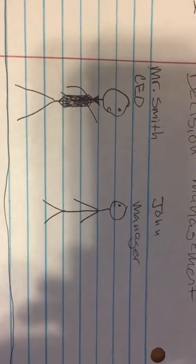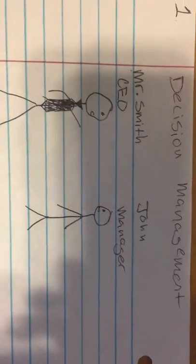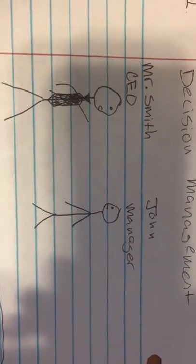Welcome to episode two of Finger Puppet Management TV for group four. Mr. Smith is the CEO of a trucking company and John is a manager.